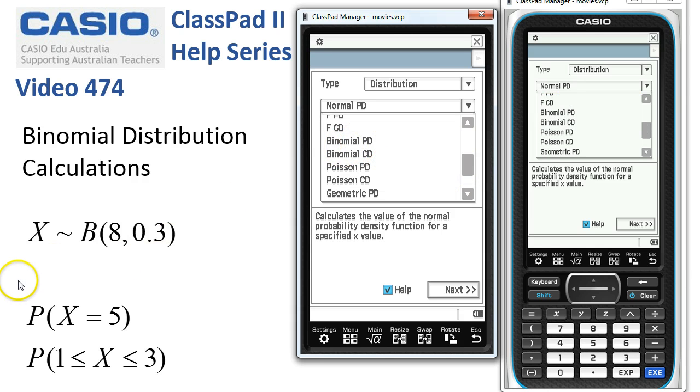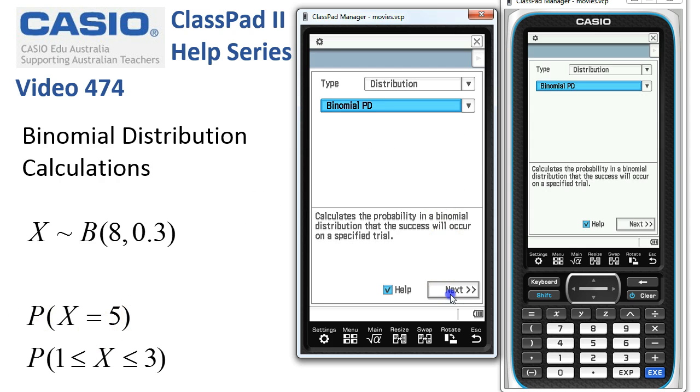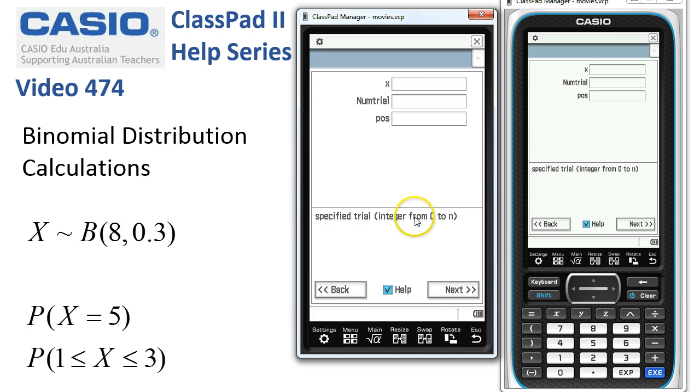Now the first problem: when we want to find the probability that x is equal to 5, that's a probability distribution that we want. We'll tap next, and x is the specified trials where we're interested in getting exactly 5 trials, so that goes in as 5.